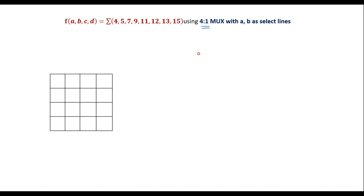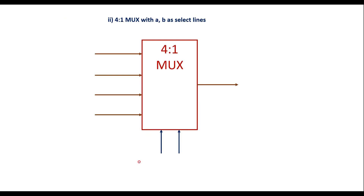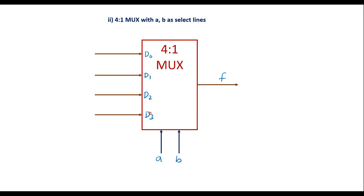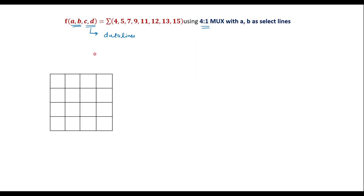In a 4-to-1 MUX, A and B are the select lines, data inputs are D0, D1, D2, D3, and the output is F. Here A, B can be used as select lines, and C and D should be used as data lines. We need to express all D0 to D3 in terms of C and D, so we write an implementation table.